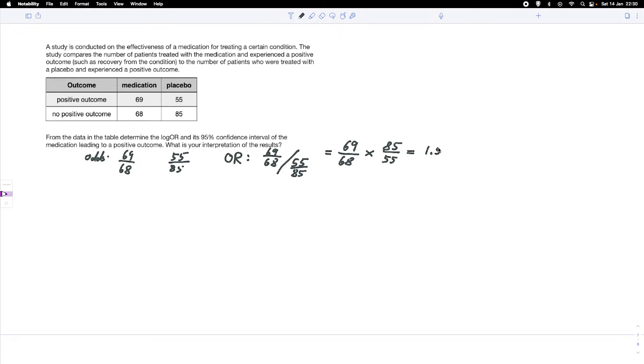For the upper bound, we get 0.45 plus the margin of error, 0.48. We can quickly calculate that. That gives us negative 0.03 and 0.93. So we would report our log OR with a 95% confidence interval as 0.45, negative 0.03, 0.93.